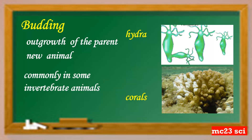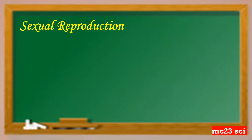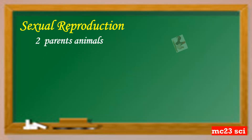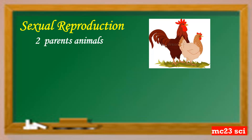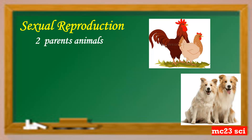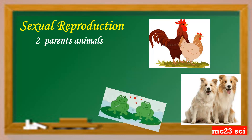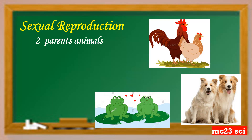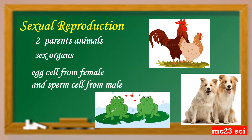Sexual reproduction takes two parent animals to produce an offspring, like chickens, dogs, and frogs. These animals have sex organs — the egg cells from the female animal and the sperm cell from the male animal.